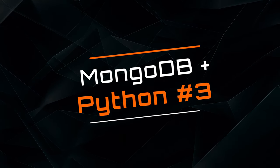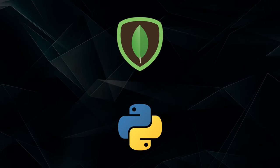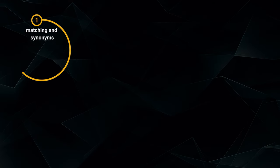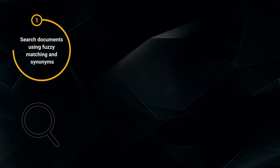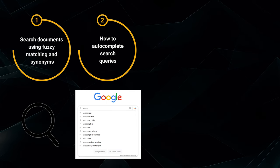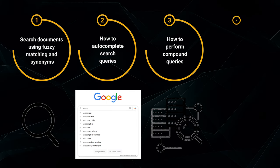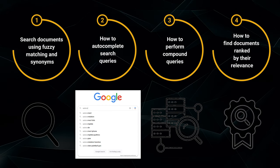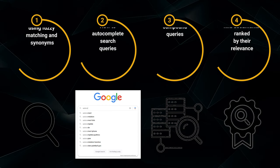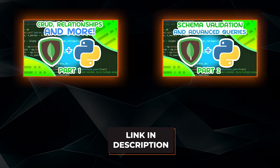In this video, I'll be continuing to teach you about MongoDB and Python by covering advanced queries and full text search. I'll be showing you how to search documents using fuzzy matching and synonyms, how you can autocomplete search queries, how to perform compound queries, and how to find documents ranked by their relevance. This video is the final video in my MongoDB with Python series, and you can check out the previous two videos from the link in the description.